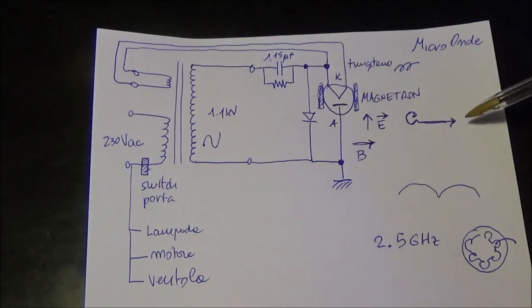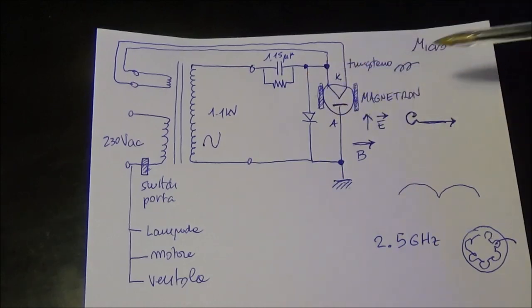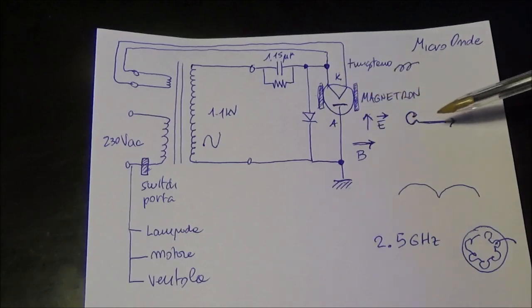Then the waves are directed to the oven. If we have a radar, that is another example of this tube, there is no more this special turn but the waves are sent to the sky.